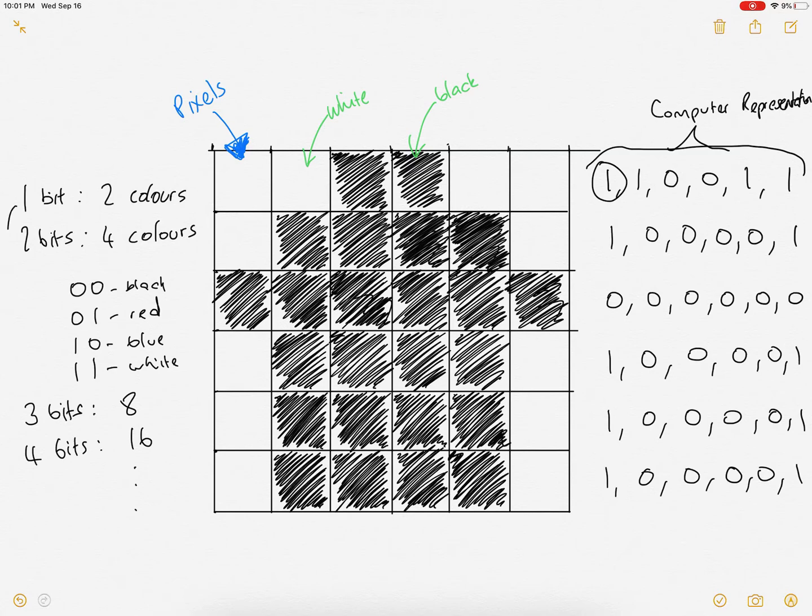And hopefully what you can spot is that every time we add a bit, so every time this is going up by one, that's plus one, this one's gone up by plus one. This one's going up by plus one.